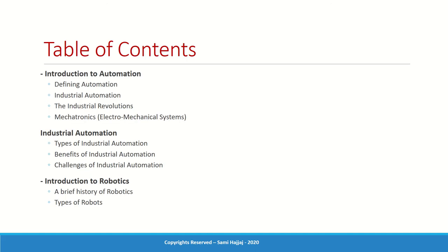Today we will talk about a few fundamental topics and introductory issues that we need to understand before we can really get into the details or the analysis of robotics. So we need to talk about automation — what is automation, and specifically what is industrial automation. Then we begin to talk about robotics in general, what is robotics and types of robotics.